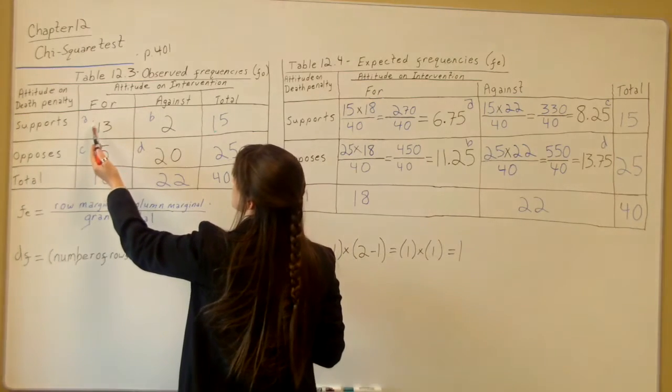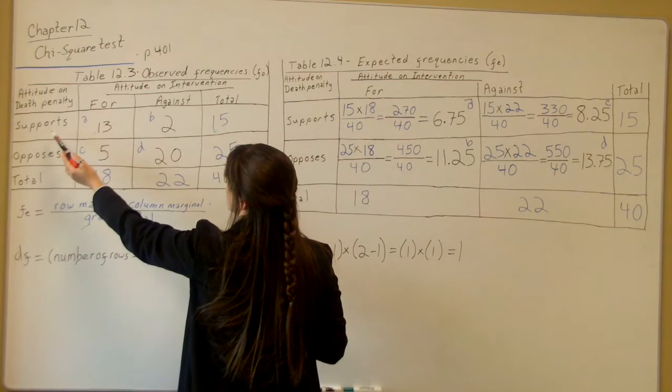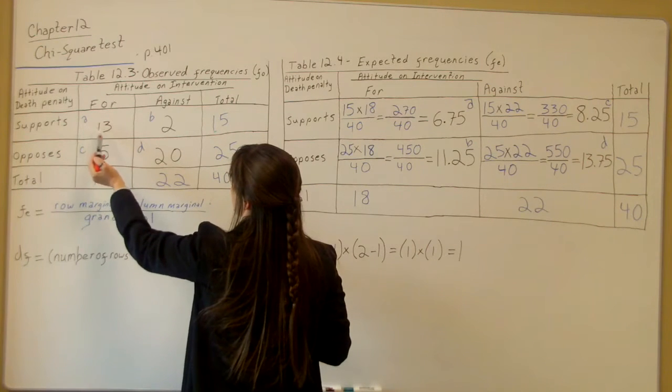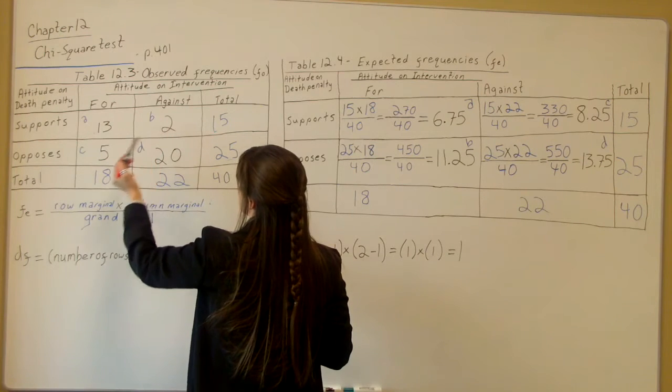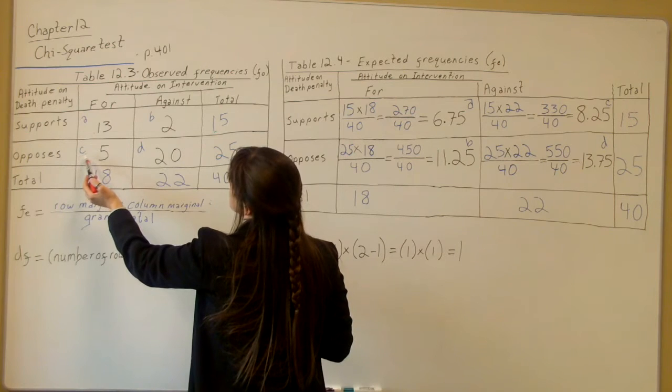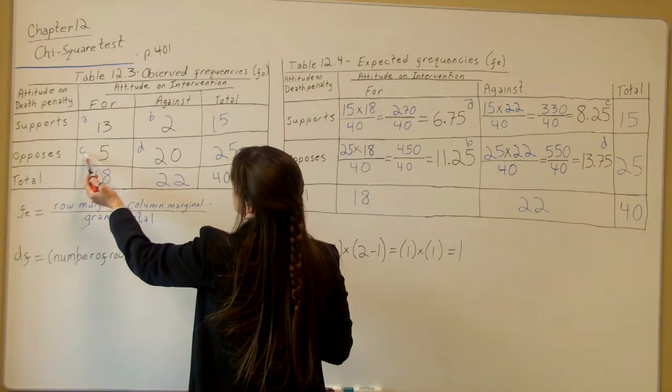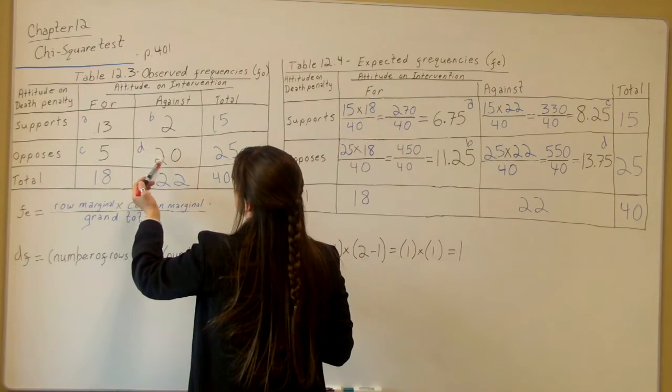And your A, notice it's the attitude on intervention is for, and the attitude on death penalty is they support it. So A is 13, going over to the right on the row, B is 2. And then for the opposes row, for the column 4, which is your C then, is 5, D is 20.